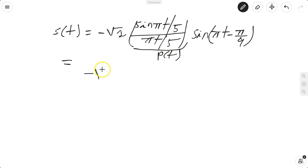So I have -√2 p(t). This whole signal is p(t). Sin(πt/5) over πt/5 is p(t). So I'll expand it.